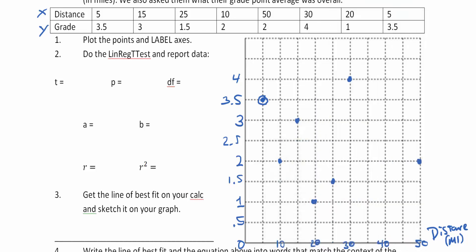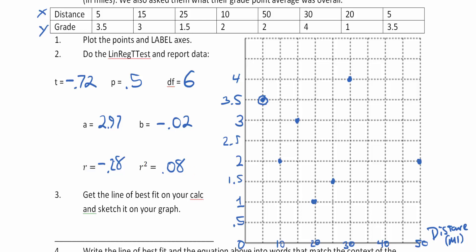Let's jot down all these numbers. The t is negative 0.72, the p-value is 0.496 — which I can round to 0.50 — degrees of freedom is 6, a is 2.97, and b is negative 0.02. The r is negative 0.28, showing a negative correlation since the points are somewhat going down. Then r-squared is 0.08, which is negative 0.28 multiplied by itself.